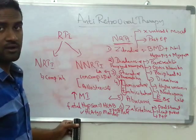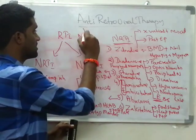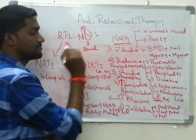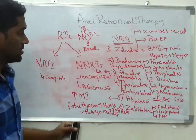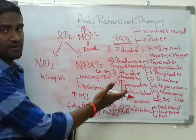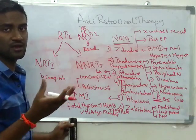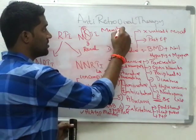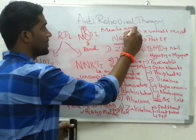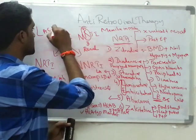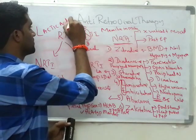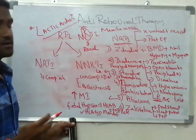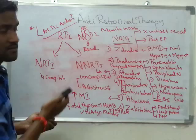To summarize NRTIs: these drugs are excreted via the renal route. As they inhibit DNA polymerase, sometimes they can also inhibit the mammalian DNA polymerase in mitochondria, causing lactic acidosis. So lactic acidosis is the specific class-wide side effect for NRTIs. This completes the group NRTI.